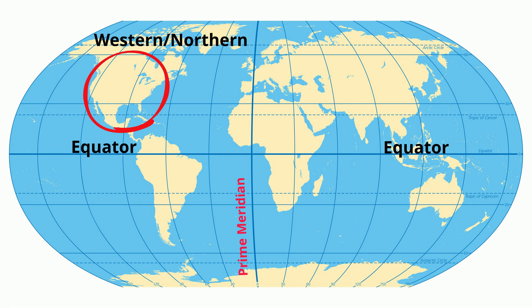However, there is one continent in the world that lies in all four hemispheres: Africa. As a result, Africa is the only continent to have land at both the equator and the prime meridian.